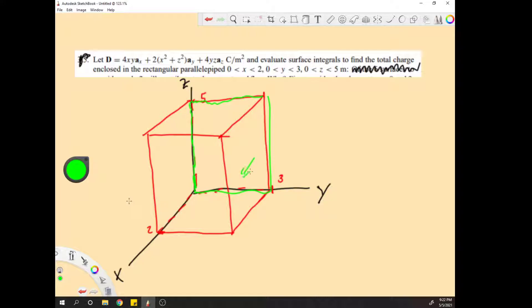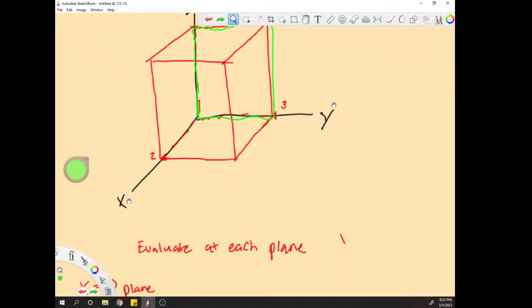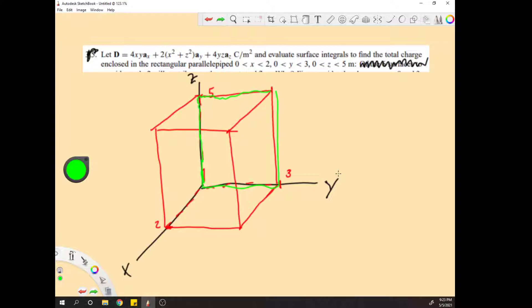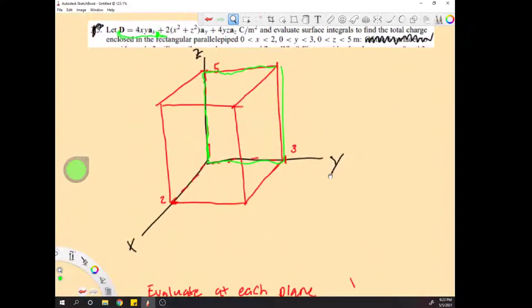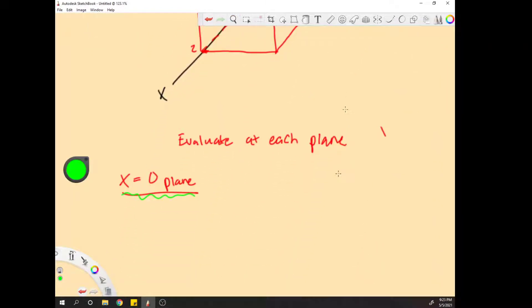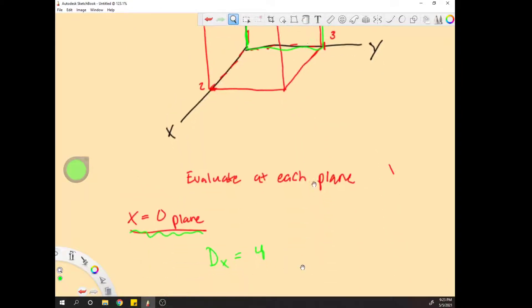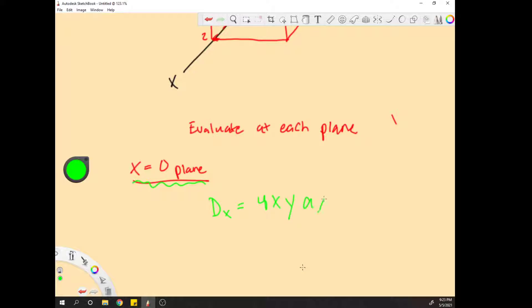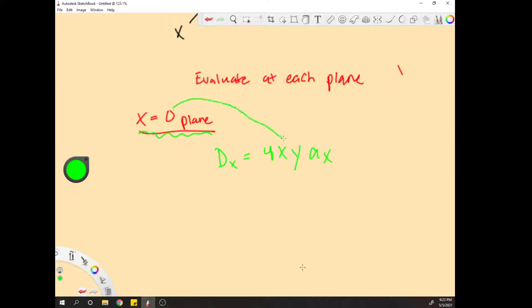The first thing to know is that when we're looking at flux entering this plane, we realize the only thing we're concerned with is the x direction of the flux. So the only part you're worried about is this x vector right here. D sub x equals 4xy ax. This works out simply because we already know x equals zero, so we plug in our x. D x equals zero, boom, first plane done. Some of these are going to come out simply.